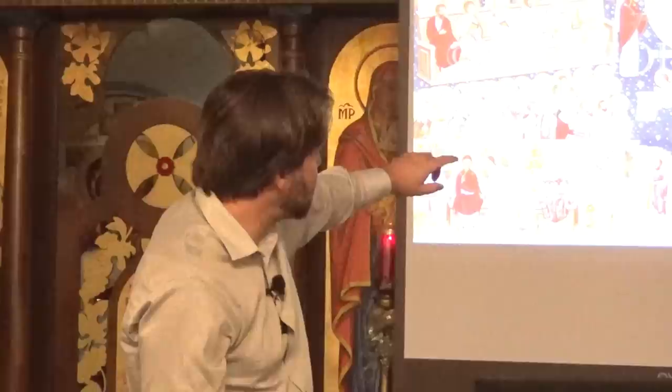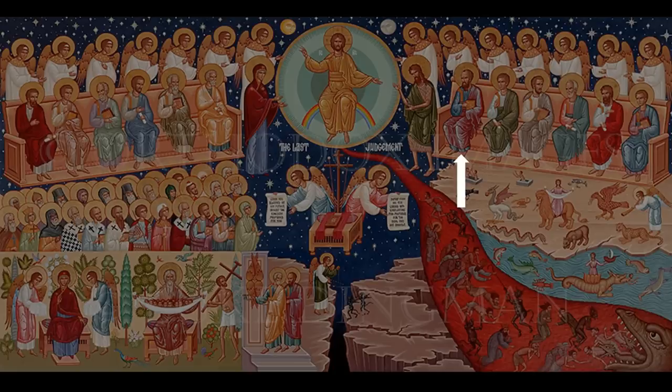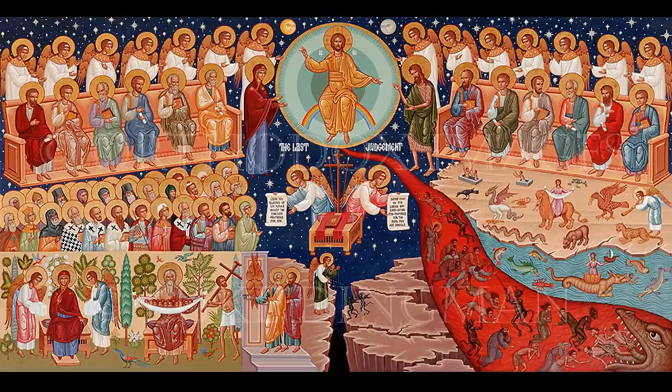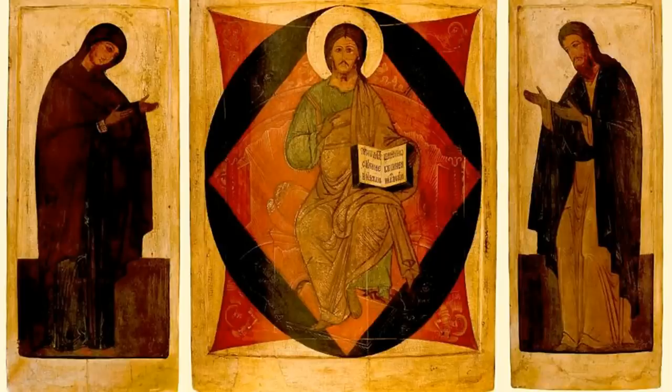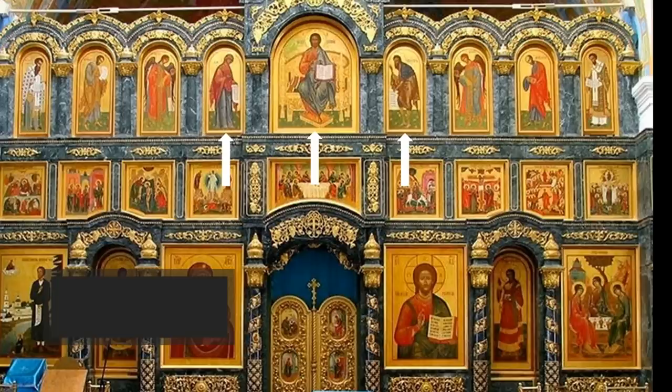Next to Christ is the Theotokos, the mother of God, on his right. And then St. John the Baptist on his left. Continuing on that side, you have St. Peter on the right of the mother of God, and St. Paul on the left of St. John the Baptist. That's what we call a deisis. The deisis is the basic pattern of all iconography: Christ in the center, flanked by different saints in a sort of hierarchy — usually the mother of God to his right, St. John the Baptist to his left. You see that often in an iconostasis, for example.